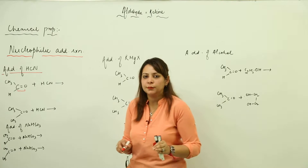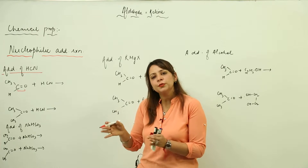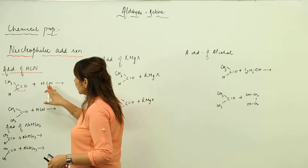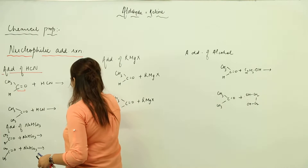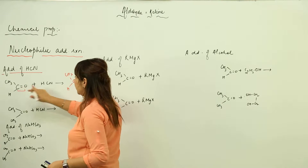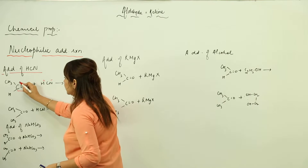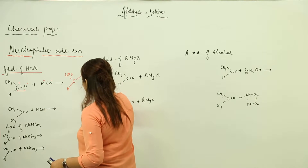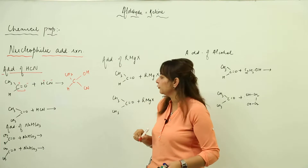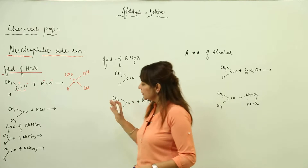We have to consider that the carbon tetravalence should not be disturbed — carbon should have only four bonds, not more, because carbon is tetravalent. So when we add HCN to it, the rest of the molecule remains the same. This is a polar bond, so H gets attached here and CN gets attached here. This compound formed is called acetaldehyde cyanohydrin.